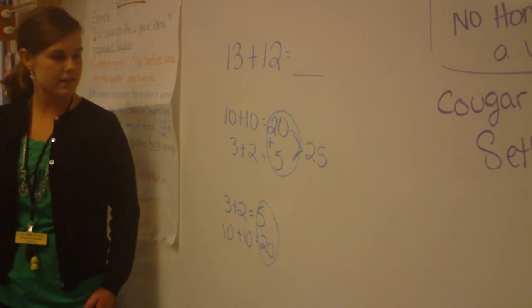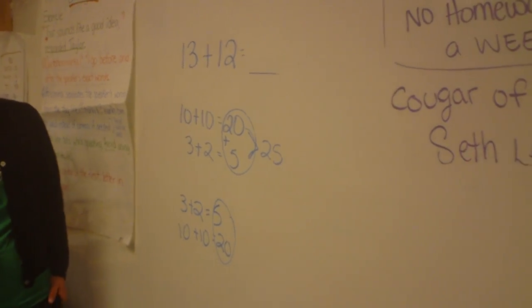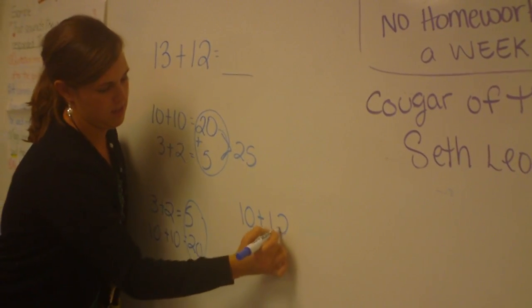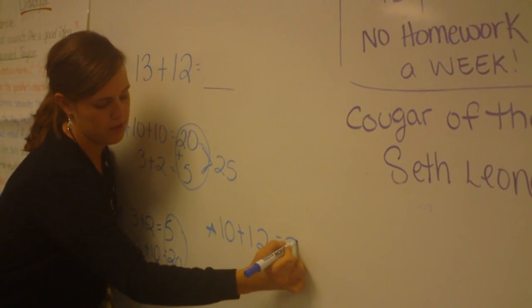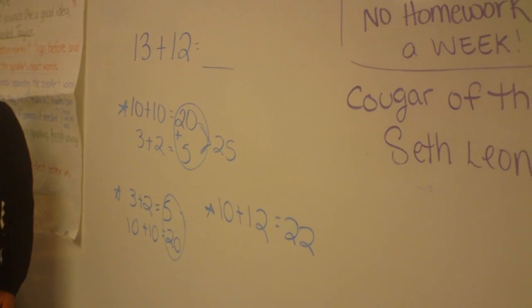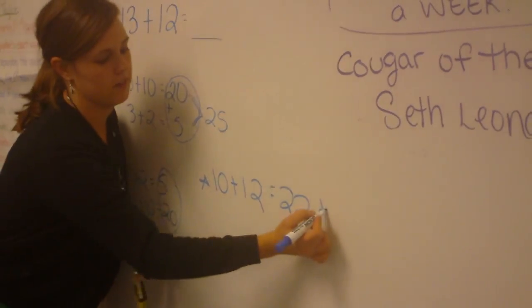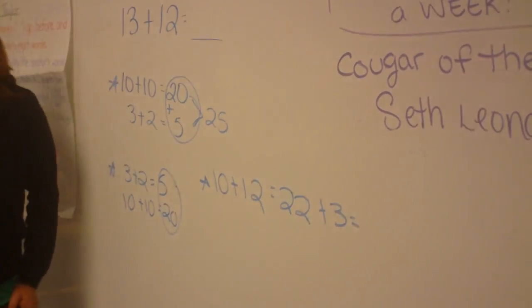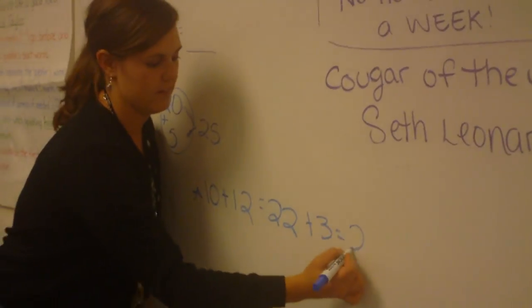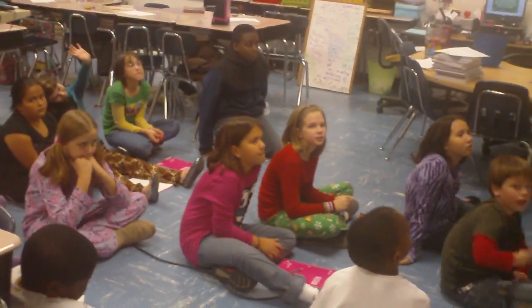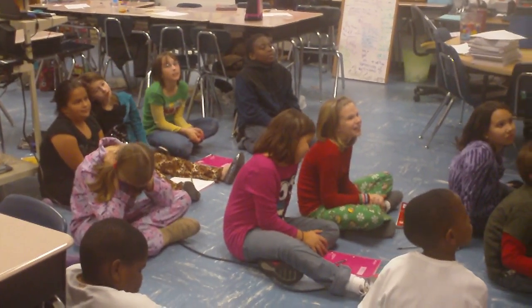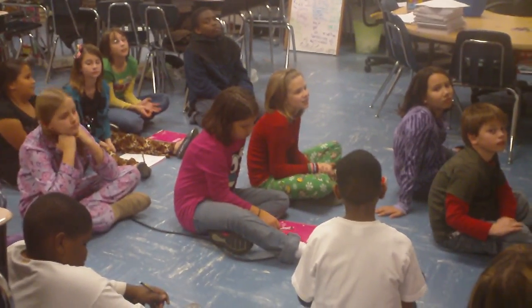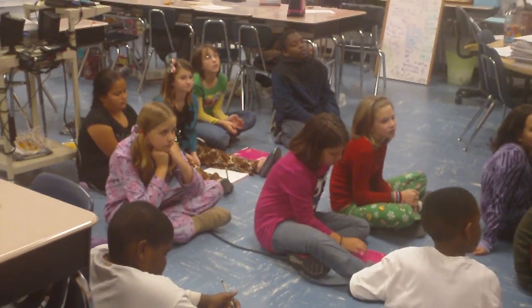One more strategy. Bryson? I did 10 plus 12. You got what? 22. Okay. Let's try another one. There's lots of ways to get to it. Just because I picked on three students doesn't mean there's only three ways to do it. Okay. Let's try another one.